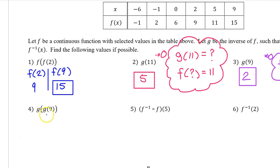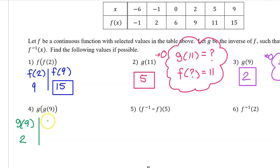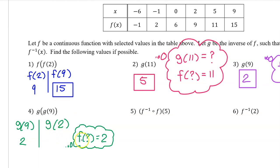Number 4: with this notation, we work from the inside out. So we begin with g at 9. g at 9 was 2. Moving to the outside, we see another g. This time we must evaluate g at 2. This is f inverse at 2. To evaluate, you ask yourself, f at what is equal to 2? f at negative 1 is equal to 2. So that's the answer.